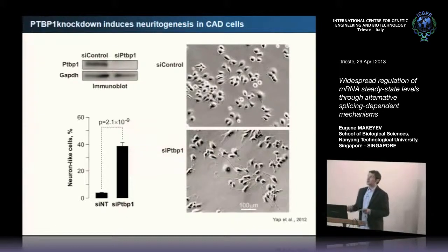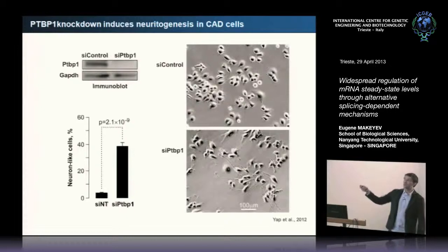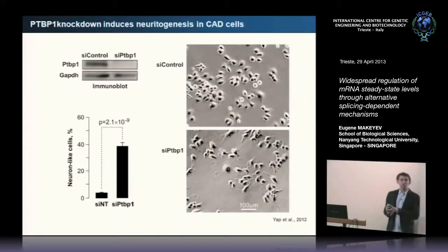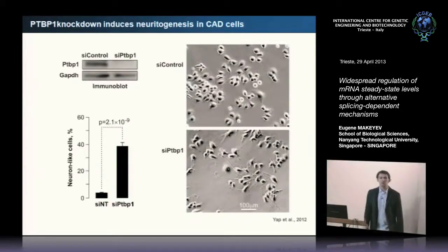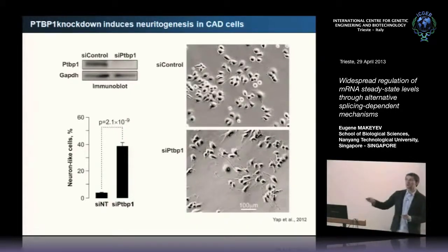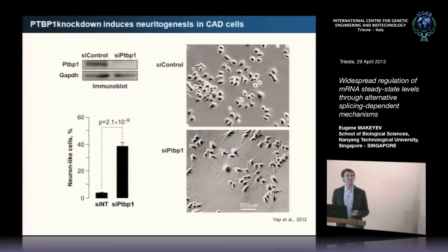By knocking down PTB alone, without touching other microRNA-124 targets, you start with proliferating neuroblastoma cells and end up with neuroblastoma cells projecting very long neurites. These cells still proliferate, but not as rapidly, and there is a statistically significant increase in the number of cells which exhibit neuron-like morphology. So the expression of PTB is important to keep cells non-neuronal. But is splicing the only thing that contributes to this phenotype?